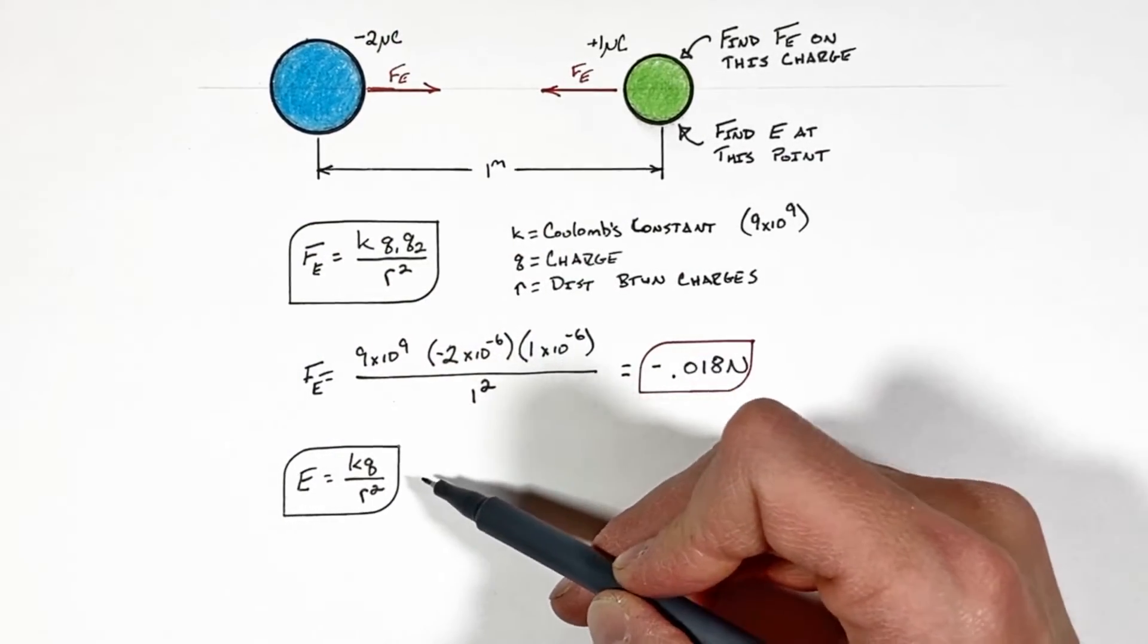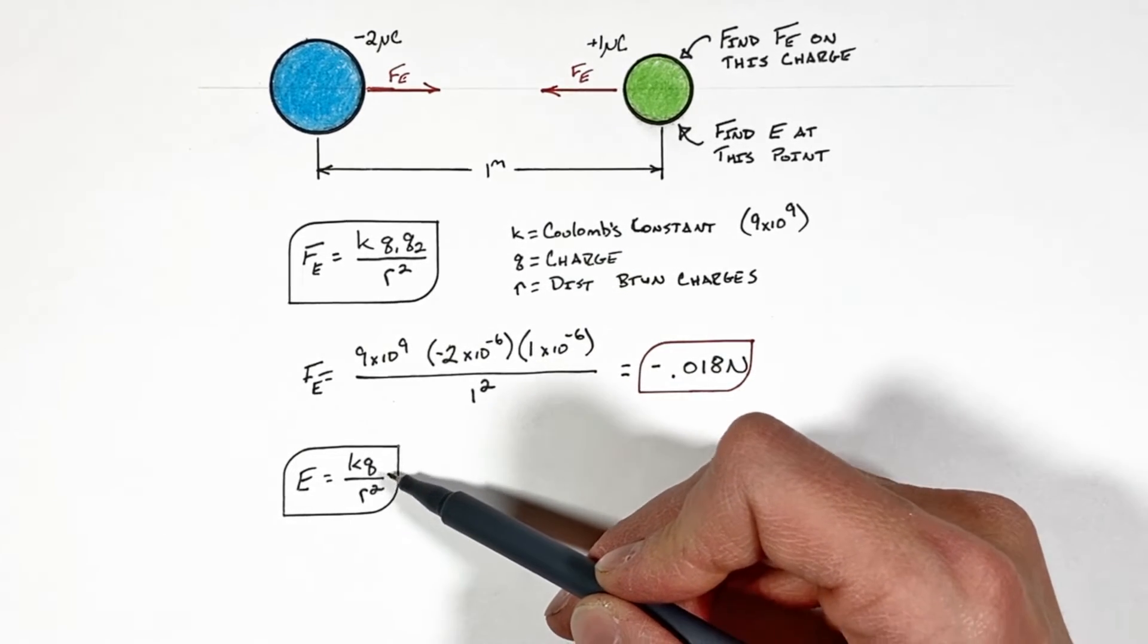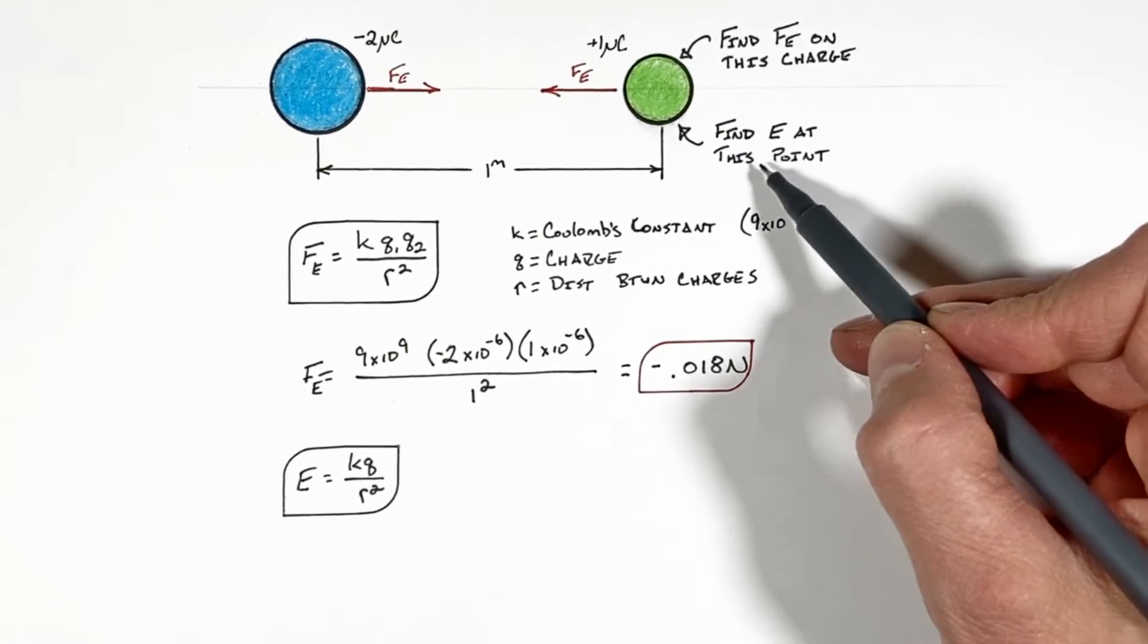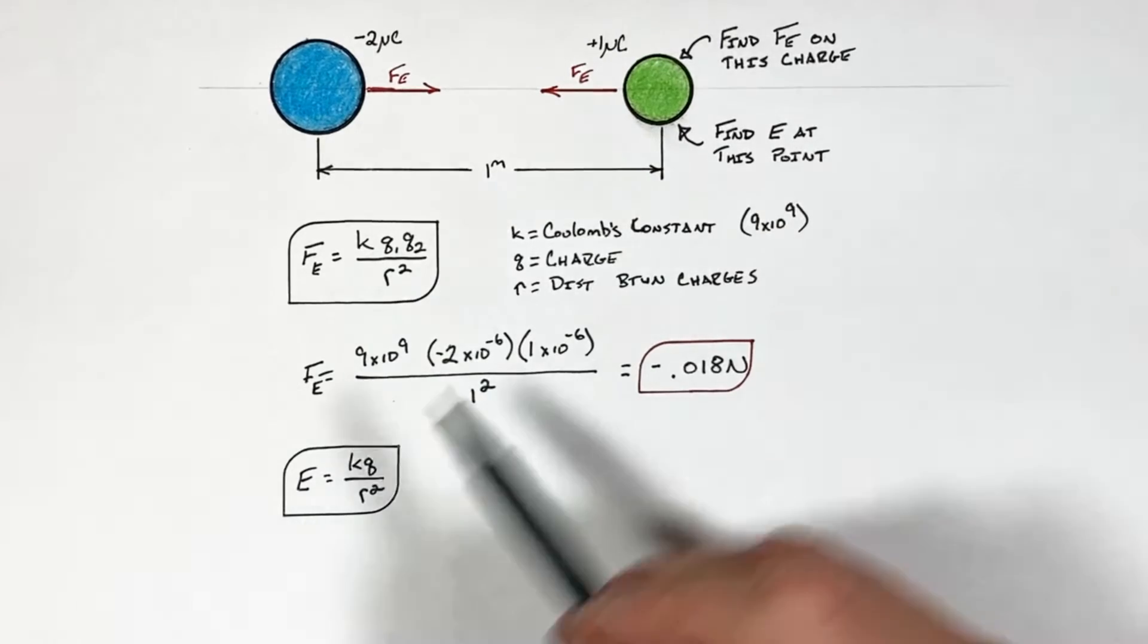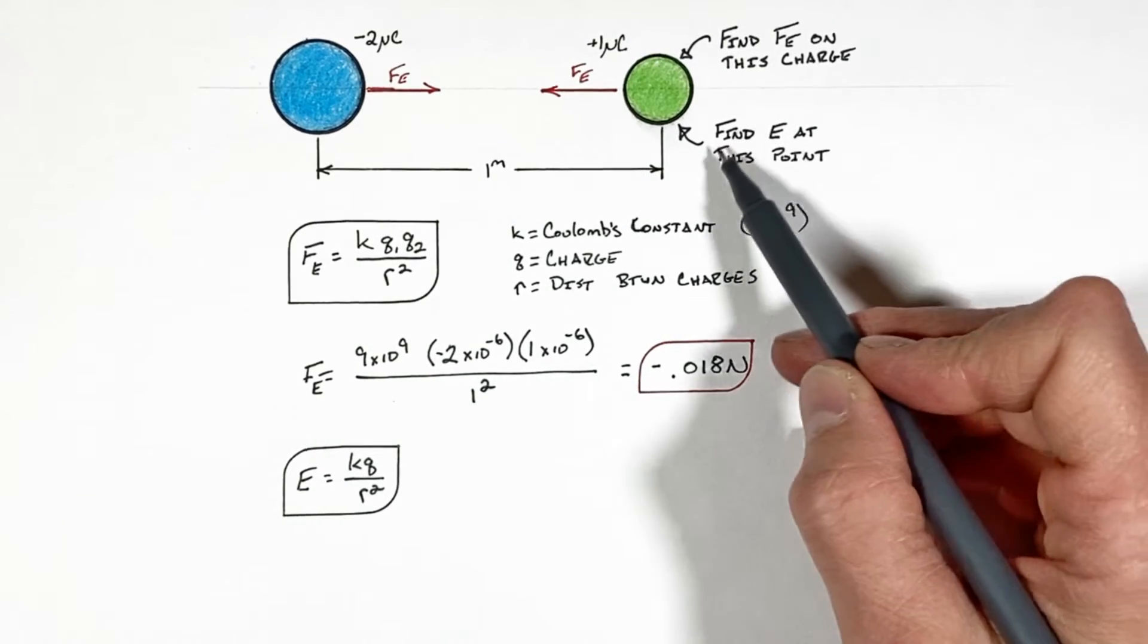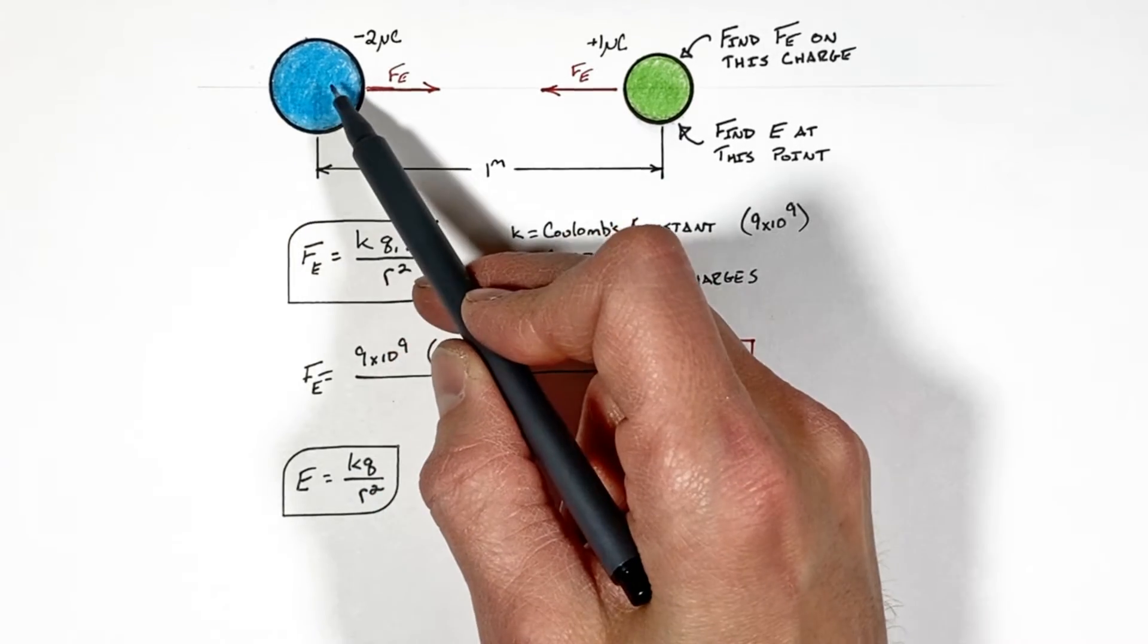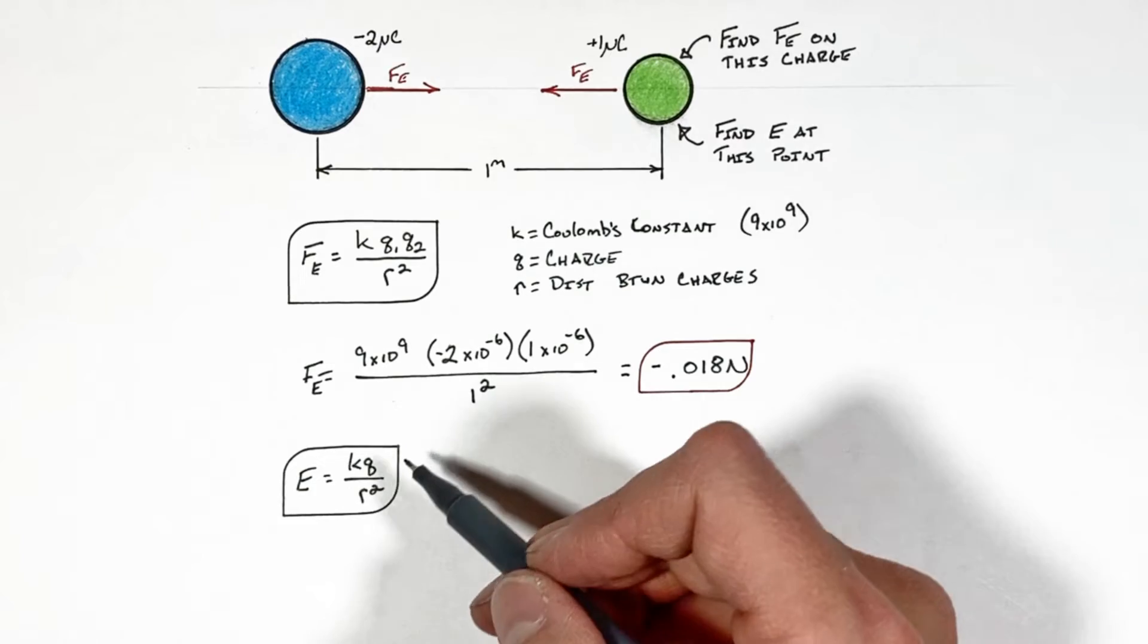The equation for electric field looks an awful lot like Coulomb's law, except it only involves a single charge. So the question comes up, if we're trying to solve for the electric field at this point, which charge do we need to use? Now you'll remember we're solving for the electric field at this point as a result of this charge, so we're going to use the magnitude of this charge in our equation for electric field.